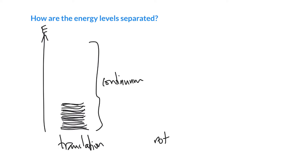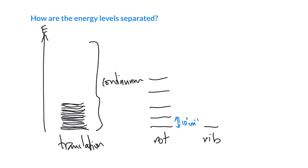For rotation, the energy levels are fairly narrowly separated — on the order of maybe 10 to the zero wave numbers, so roughly 1 to 20 wave numbers as a typical separation for rotational energy levels. For vibrations, the spacing is much more widely separated — though this isn't to scale — a typical vibrational spacing might be on the order of 10 squared to 10 cubed wave numbers. For example, the carbonyl stretch is about 1700 wave numbers, about 1.7 times 10 to the three, and that spacing corresponds to the same value.